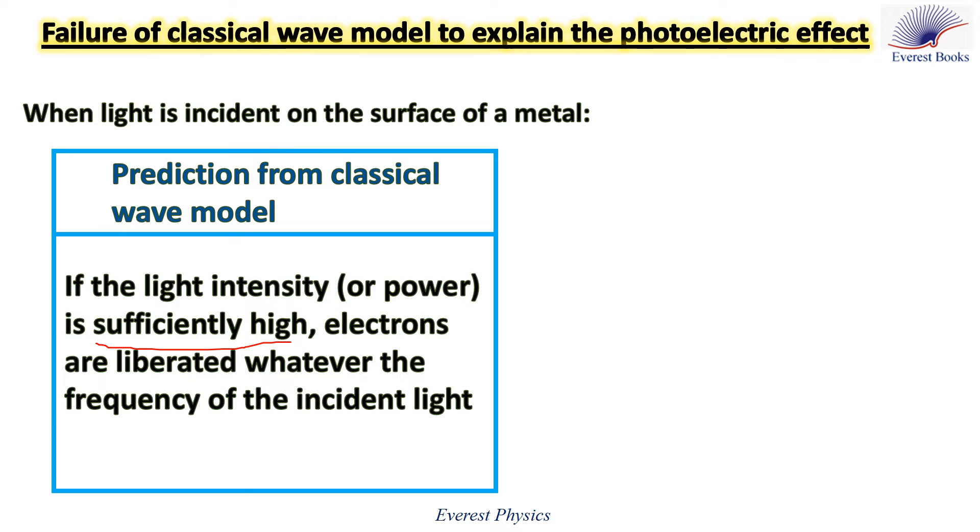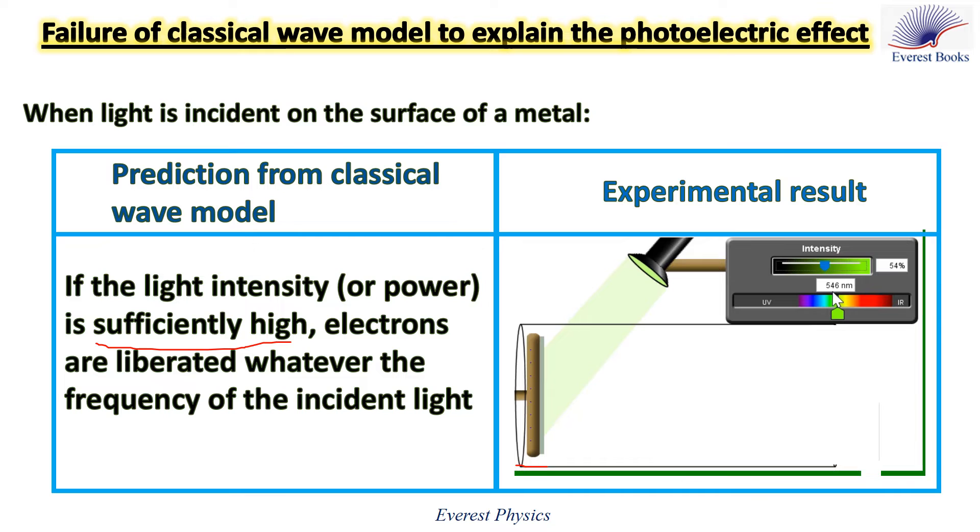Let's move to the experimental results. A green light is incident on this metal. We increase the intensity of this light, even though the intensity is increased, no electrons are liberated from the surface of the metal.